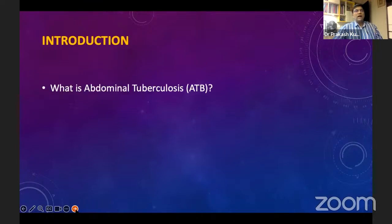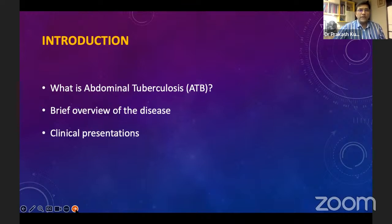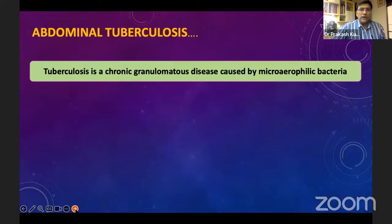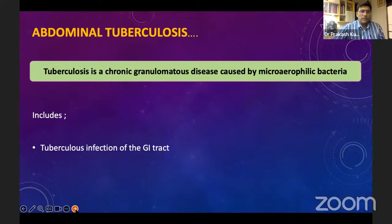Abdominal tuberculosis is a chronic granulomatous disease caused by mycobacterium tuberculosis. As a surgeon, you deal with tuberculosis infection of the GI tract — the mycobacterium can affect from the esophagus right to the anus, so no part of the GI tract is immune. It may then involve mesenteric lymph nodes, causing caseating necrosis. Only 15 to 18% of patients with abdominal tuberculosis have active pulmonary disease, and only up to 25% have some radiological evidence of old healed lesions. Intestinal tuberculosis accounts for only 2% of tuberculosis globally.